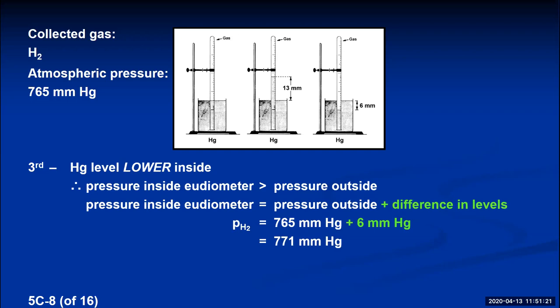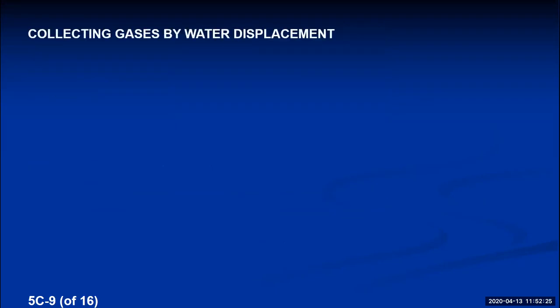We won't actually collect gases by mercury displacement in lab because that's a large amount of mercury for a class to use, and mercury is toxic. If a beaker tips and mercury spills on the floor, it rolls into cracks and must be carefully vacuumed up. Mercury vapor is a long-term health hazard, so water displacement is used instead.